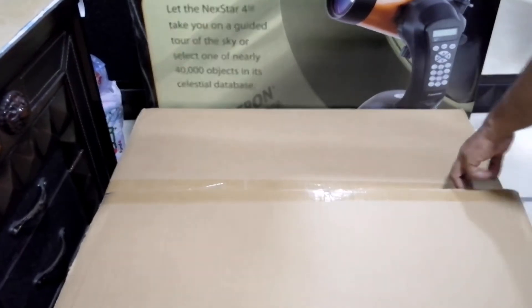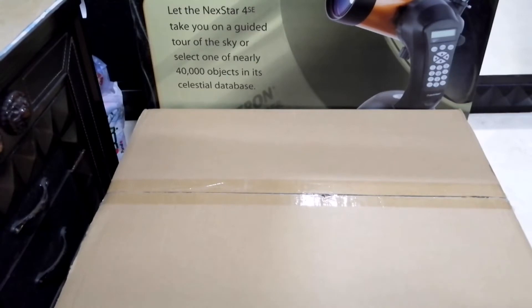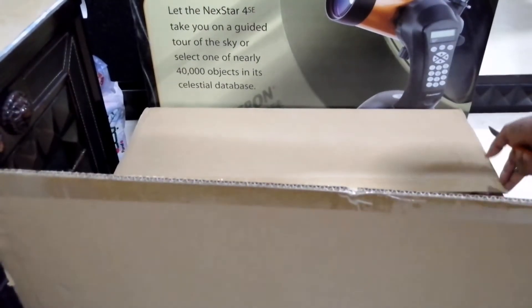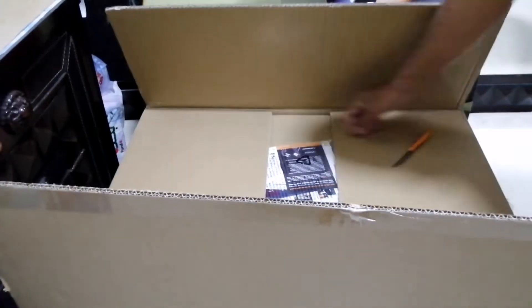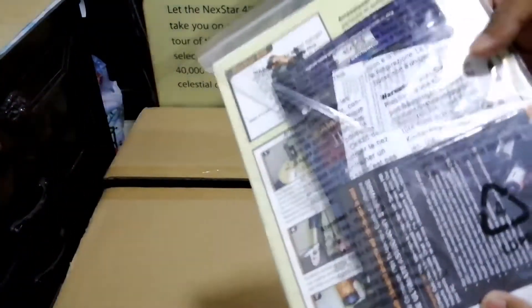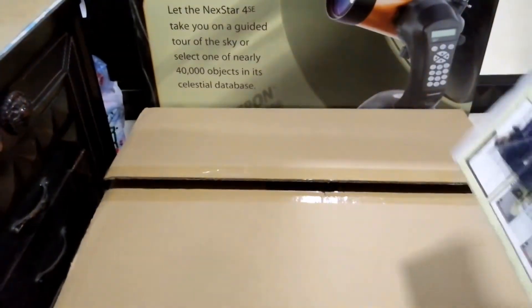Celestron NexStar Series Key Features: Computerized hand control with a nearly 40,000 object database and motorized alt-azimuth mount. Quick release optical tube for easy no-tool setup. StarBright XLT enhanced coatings for maximum light transmission and clarity. SkyAlign allows you to align on any three bright objects for a fast and easy alignment process.